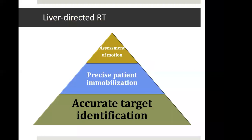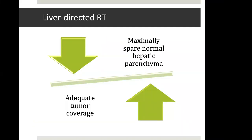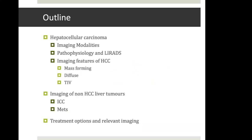Why should we talk on imaging, being a radiation oncologist? We need to understand imaging for accurate target identification, which is a very important component of radiation therapy to the liver, besides motion estimation and immobilization, and for adequate tumor coverage while sparing normal hepatic parenchyma. In the coming half hour, I will talk mainly about hepatocellular carcinoma — the most common liver tumor — imaging modalities, pathophysiology, LI-RADS, and imaging features of different kinds of HCC, including mass-forming, diffuse infiltrative, and tumor in vein, as well as non-HCC liver tumors and treatment options.